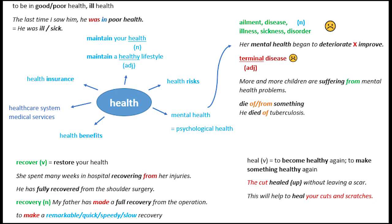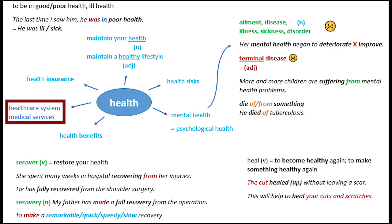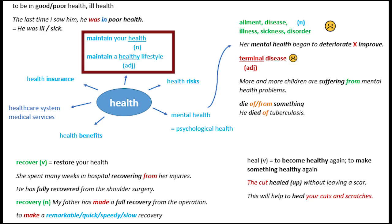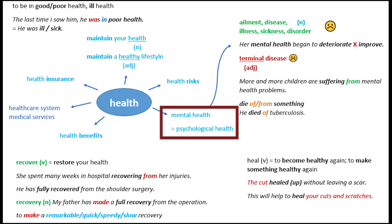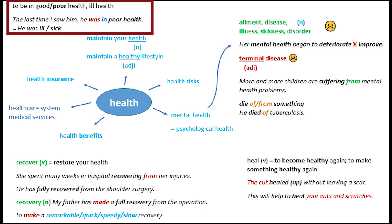I have lots of collocations around the noun 'health': health benefits, health care system — medical services is a near synonym — health insurance, maintain your health or maintain a healthy lifestyle. Health is a noun, healthy is an adjective. Health risks, mental health, which means psychological health. Up here I have 'to be in good health' or 'to be in poor health' or 'ill health.'